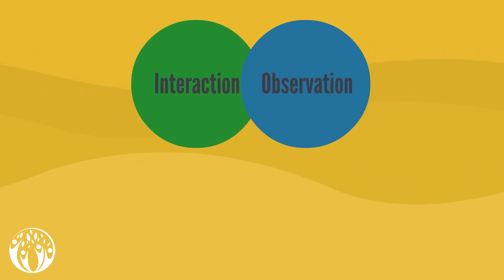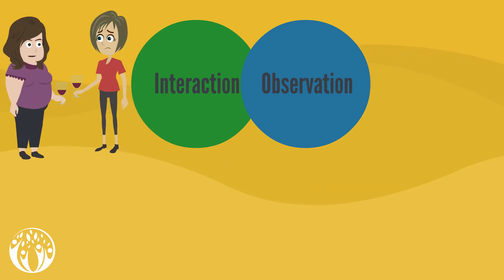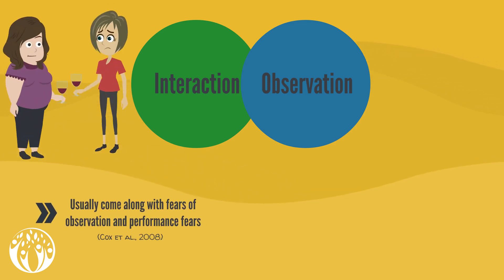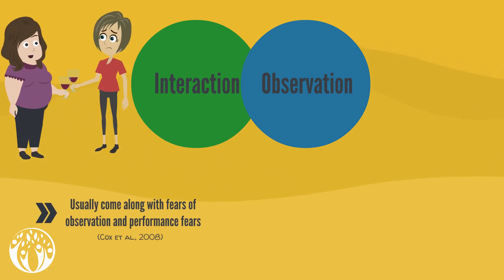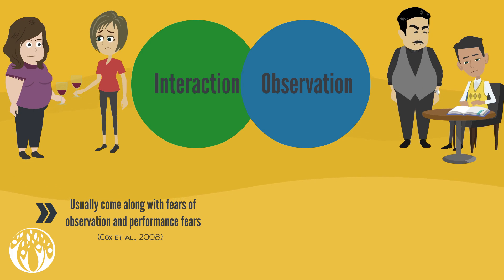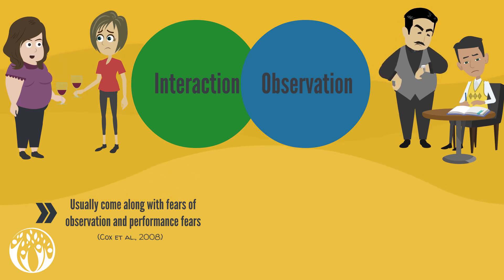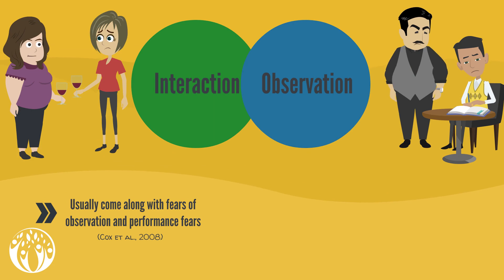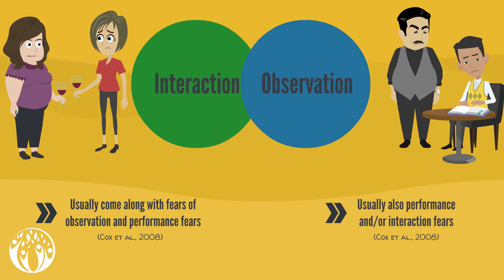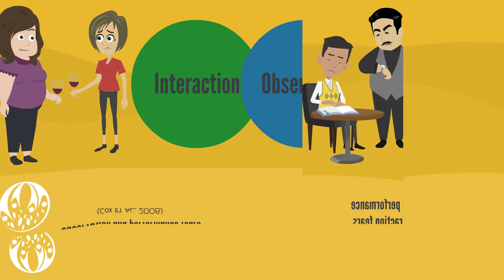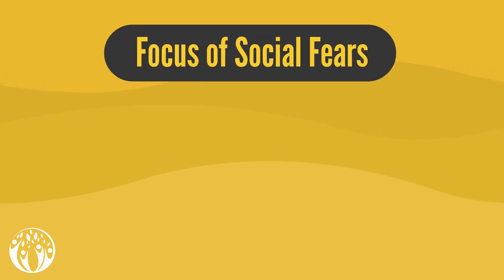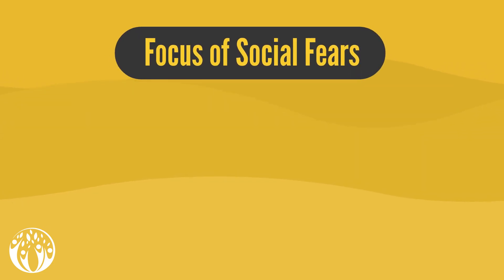Fears related to interaction and observation situations are not easy to separate since they tend to be intertwined. Fears of interaction usually come along with fears of performance and observation situations, and fears of being observed — such as when writing or eating and drinking in public places — in most cases come along with performance and/or interaction fears.